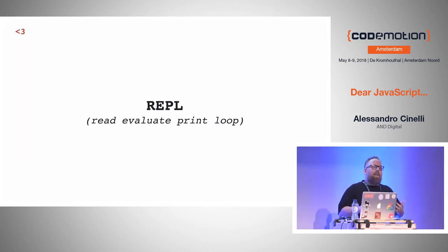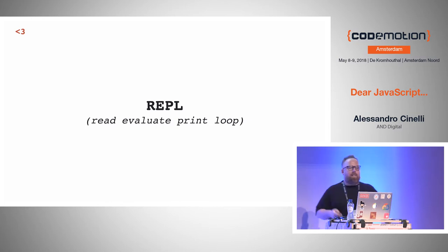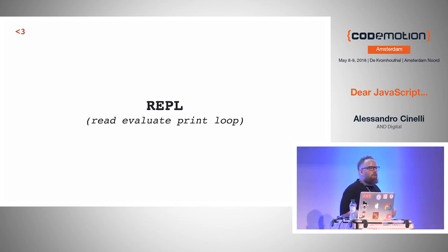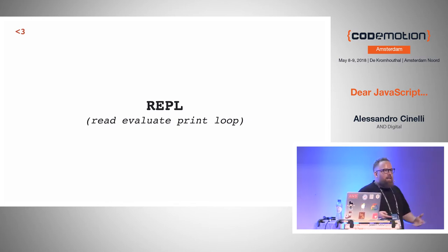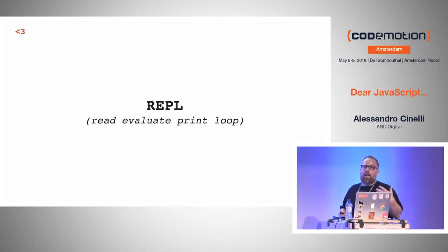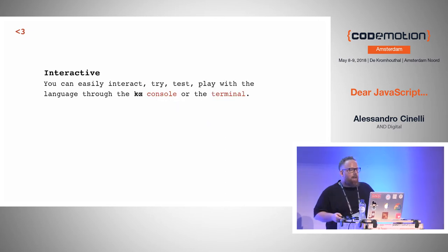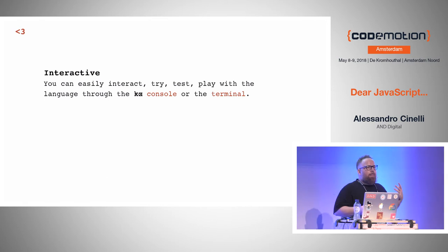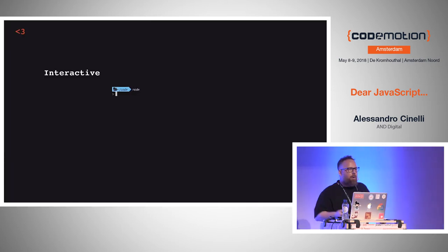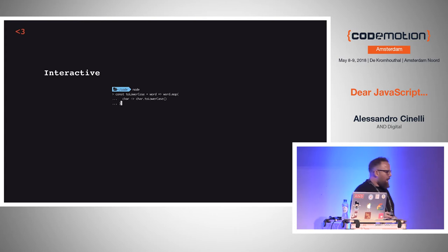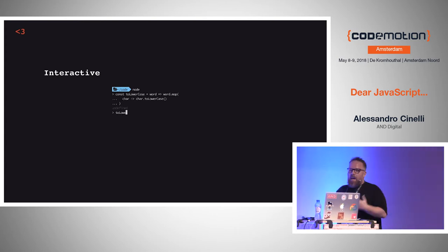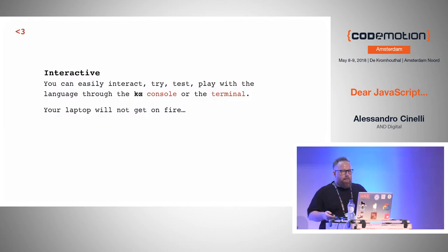Another reason I really love JavaScript is because it has the REPL — the Read, Evaluate, Print Loop. Every time you want to try or test something, you can easily do that through a console or a terminal. With Node you can do that easily, and also in your Chrome browser console. You can try things and you're good to go.